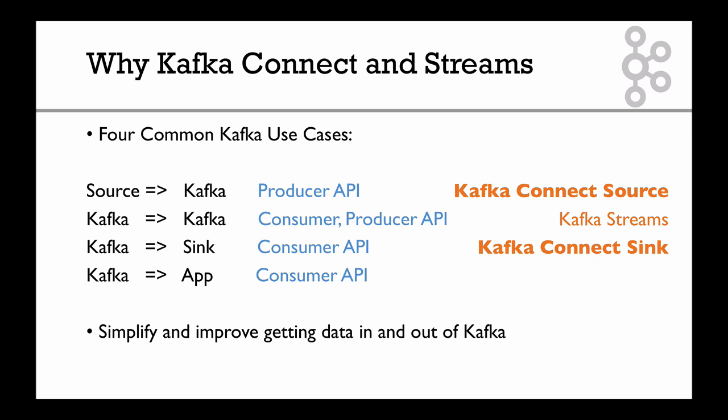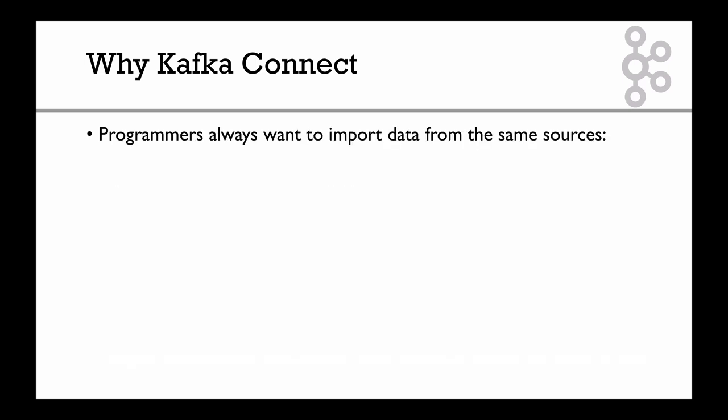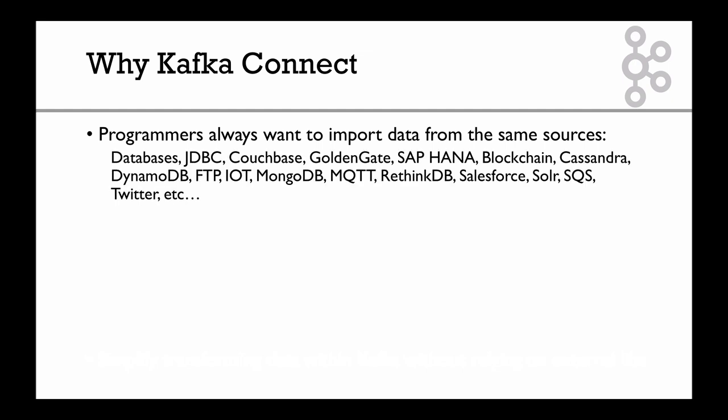So Kafka Connect — what does it do? It helps you simplify and improve getting data in and out of Kafka, and there are a lot of connectors that allow you to do that. Kafka Connect solves problems for programmers just like you and me. We've always wanted to import data from the exact same sources — databases, JDBC, Couchbase, Golden Gate, SAP, Blockchain, Cassandra, DynamoDB, FTP, IoT, MongoDB, MQTT, RethinkDB, Salesforce, Solr, SQS, Twitter, and so many more. The number of technologies that have your source data is pretty much limited — there's not an infinite number of data sources.